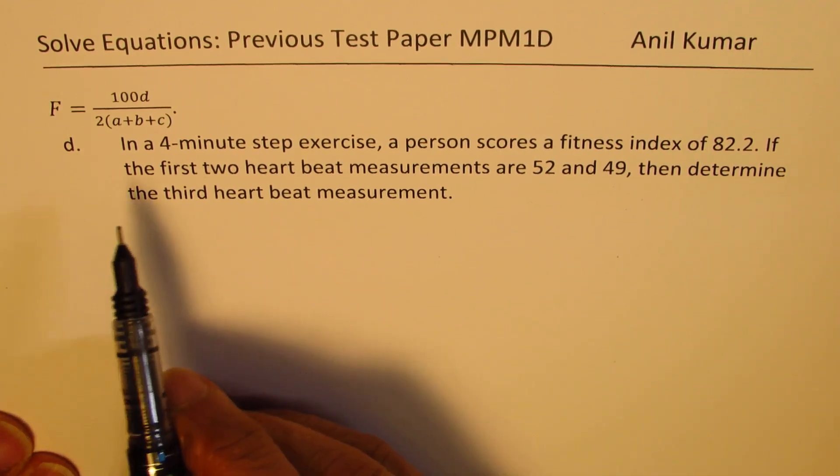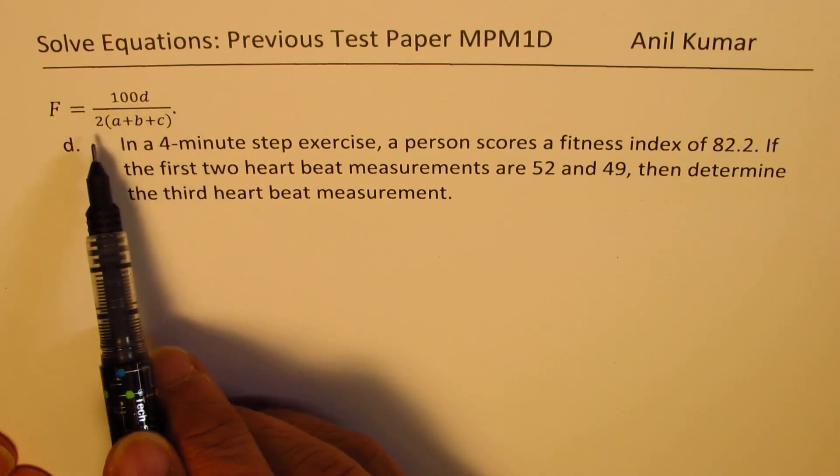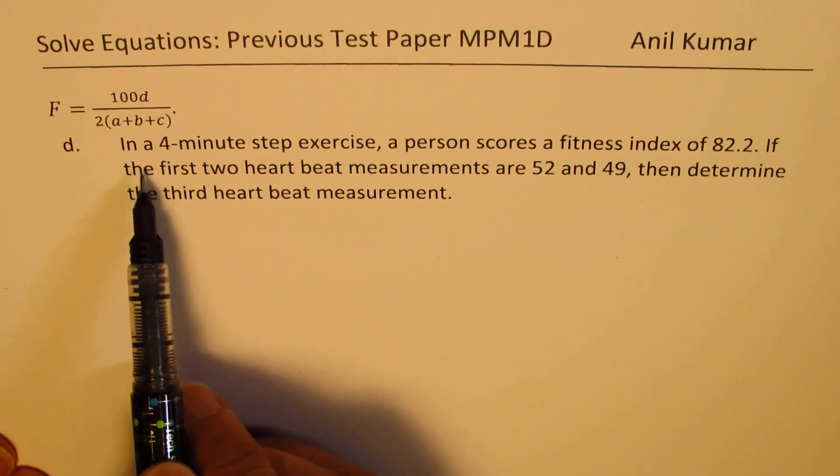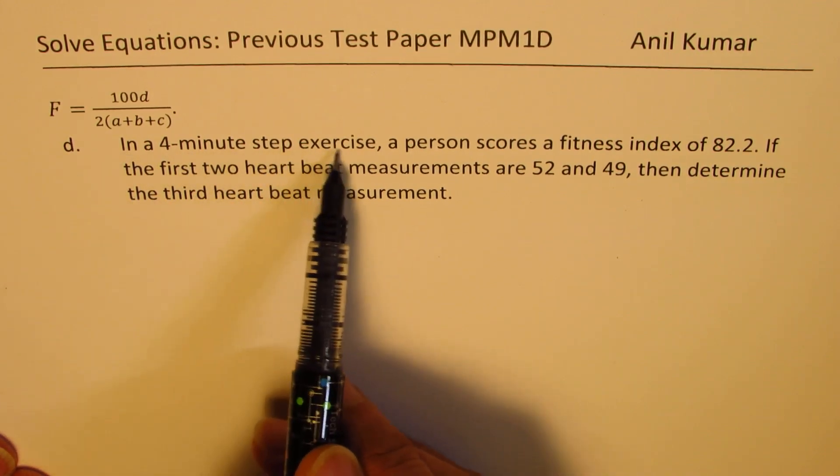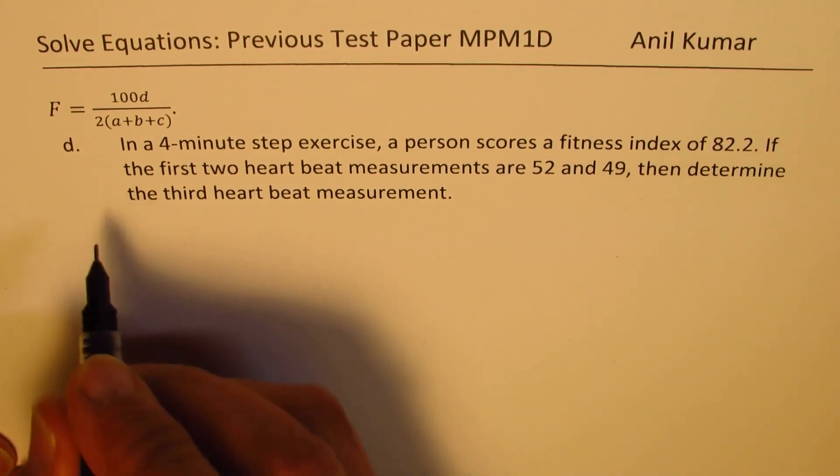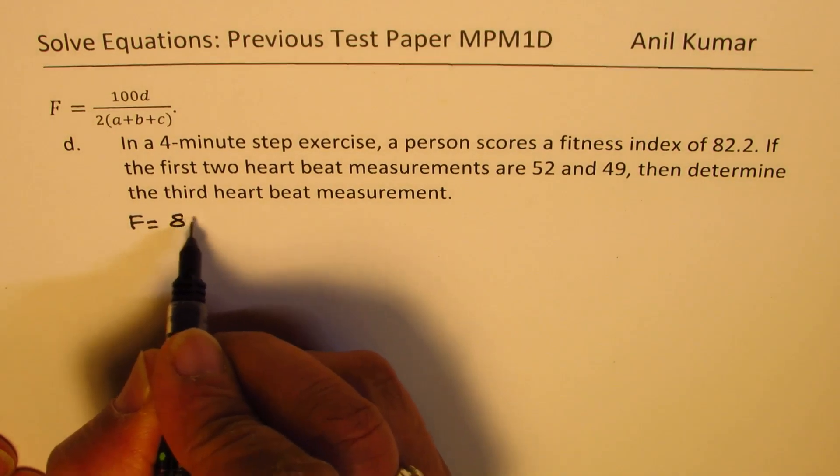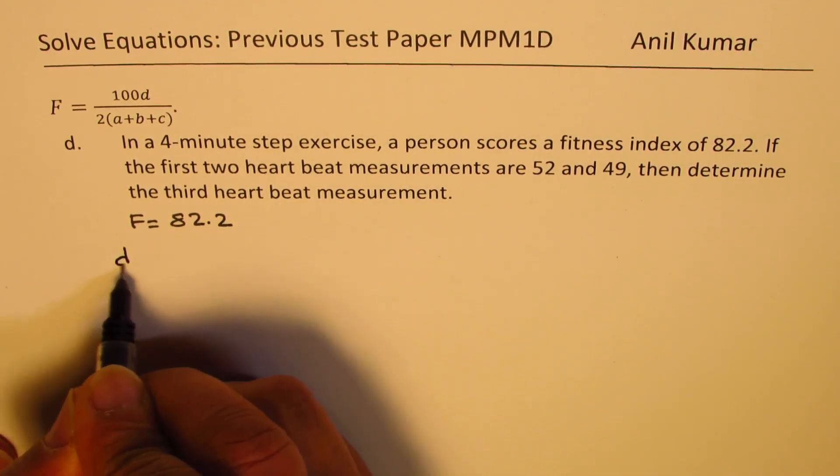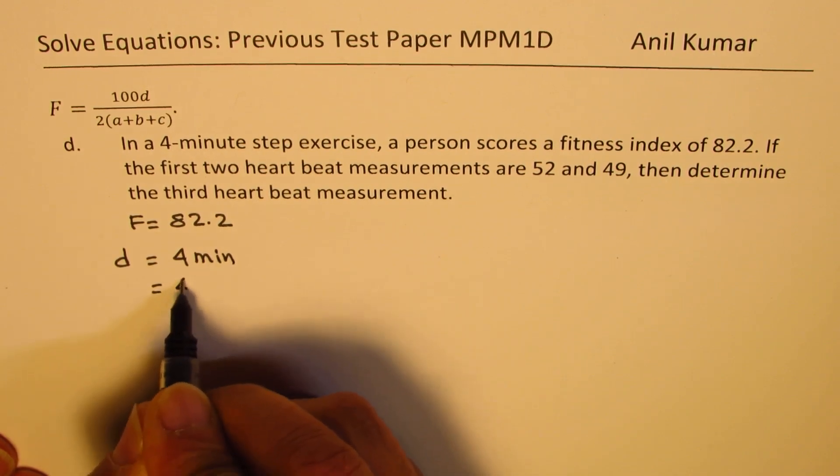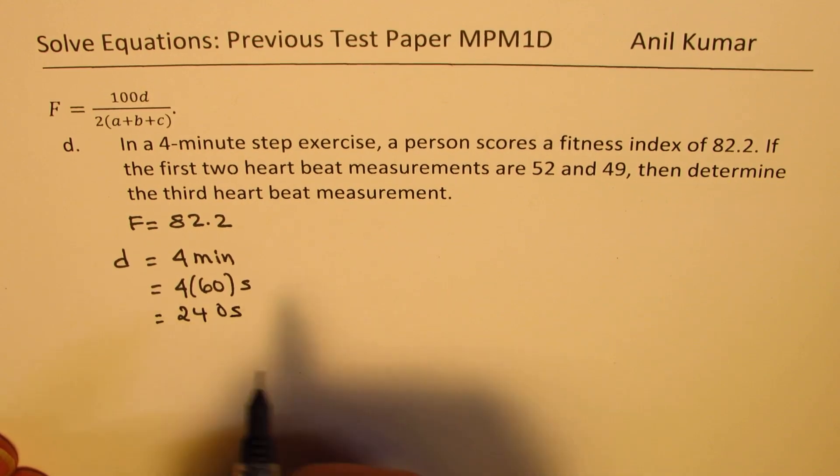Let's move on and take part D. So that is the last part. Formula is given to us 100D divided by 2 times (A plus B plus C). Part D is in a four minute step exercise. A person scores a fitness index of 82.2. So fitness index is 82.2. The value of D is four minutes, which is 4 times 60 seconds or 240 seconds.